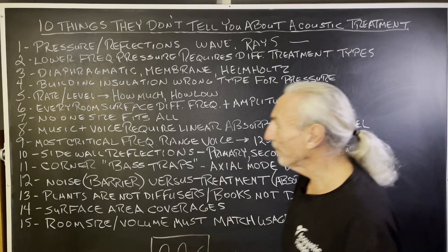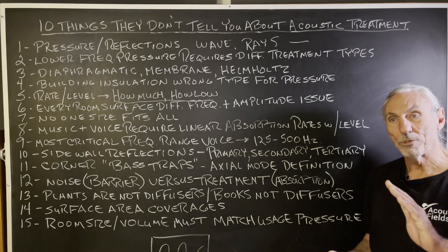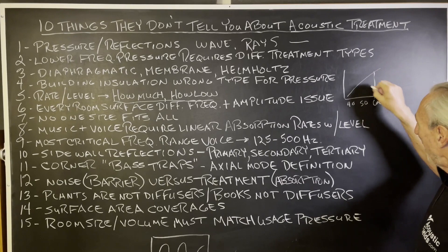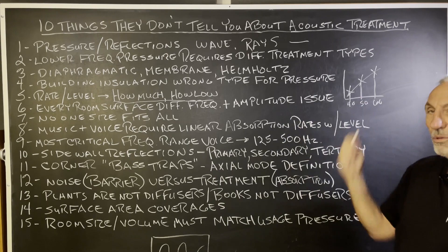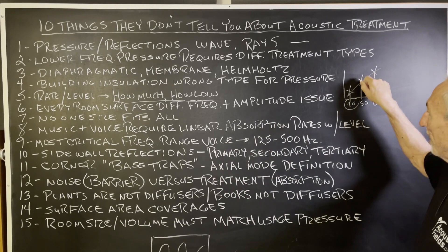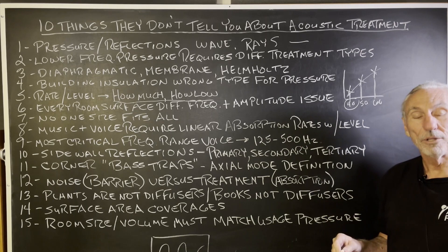Rate and level — companies are really notorious at fooling people. Rate is how much absorption. If you look at a curve, rate is how fast — how much energy do you get at those frequencies, say 40, 50, 60 Hz? That's called the rate of absorption. Anybody can design a product that goes down to 40 Hz — the hard part is how much energy you're going to get at those frequencies. Per square foot, you want a very powerful absorber. The more powerful it is, the less space requirements you're going to need.